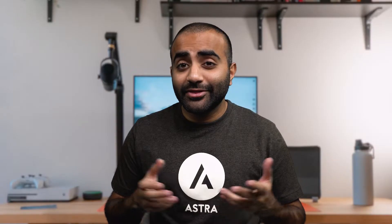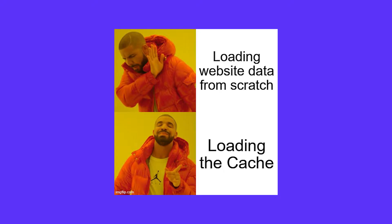Using the analogy from the intro: the first visitor to the website asks the maths question, then our website will calculate and provide that answer. When someone else visits the website and asks the same question, the server will already have the answer ready to present it quickly without having to calculate it again. Similarly, our website data will be stored as a cache, and instead of requesting all the website data each time, the cache will be loaded instead, resulting in a much faster load time.